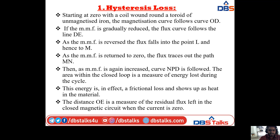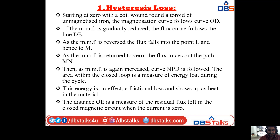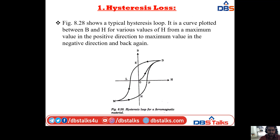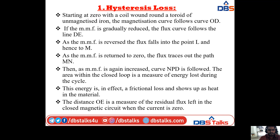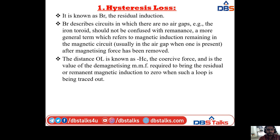As MMF returns to zero, the flux traces path MN in the negative side. As MMF is again increased, curve NPD is followed back to the positive side. The area within the closed loop is a measure of energy lost during the cycle — this energy shows up as heat in the material. The distance OE is the residual flux (BR, residual induction) remaining when current is zero.